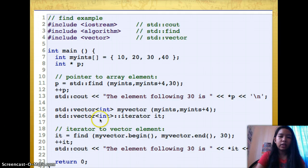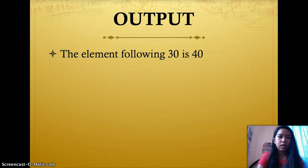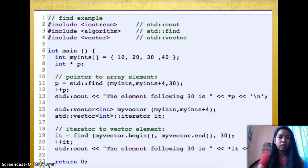std::vector<int>::iterator it, the iterator to vector element. it equals find myvector.begin, myvector.end, and 30. std::cout the element following 30 is *it. So the output for this is the element following 30 is 40.